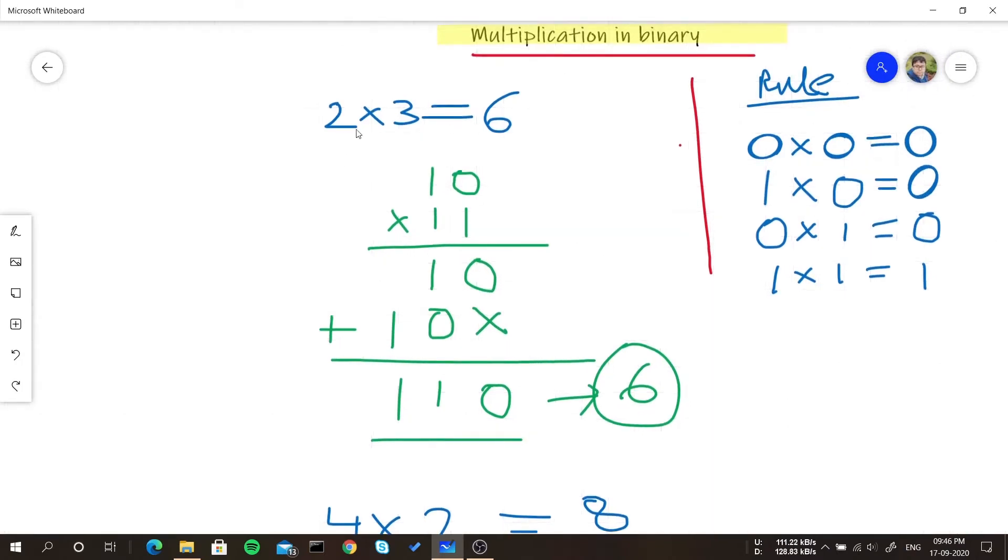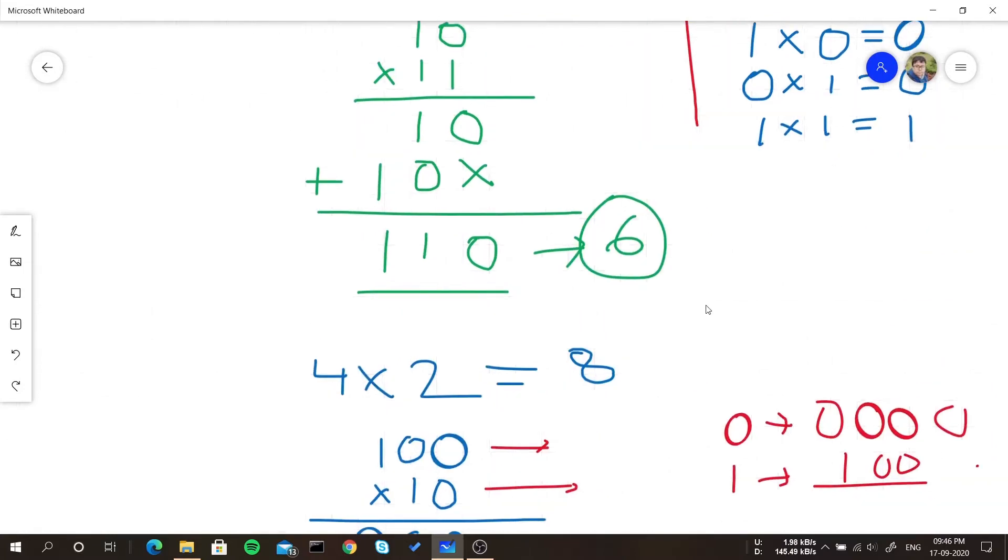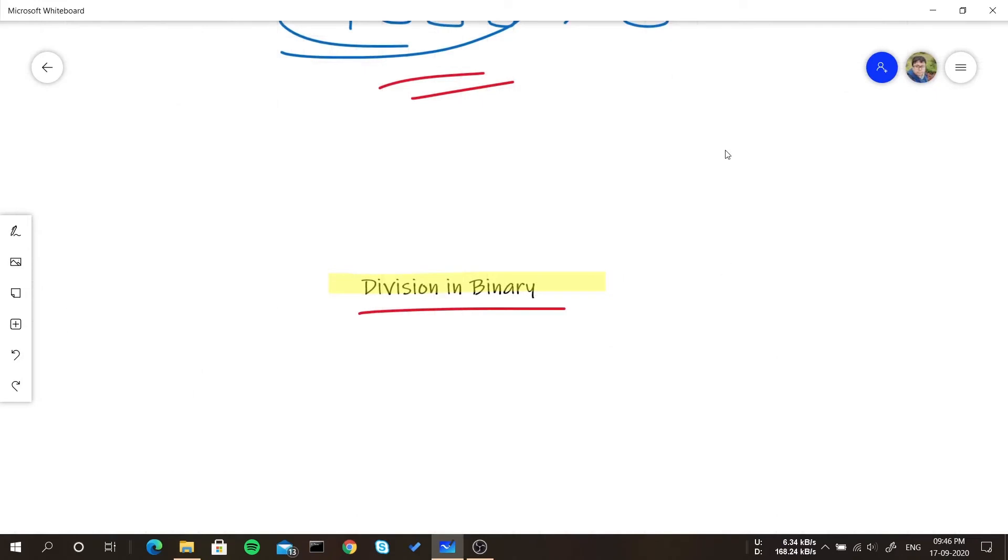So let's take 2 into 3 is equal to 6, so we will divide 6 by 2 so that will result up to 3. So let's check if it is correct or not, so how it is done. So there is no basic rule for anything in division, just the simple division as it is we do on regular mathematics. So we were doing 6 by 2.